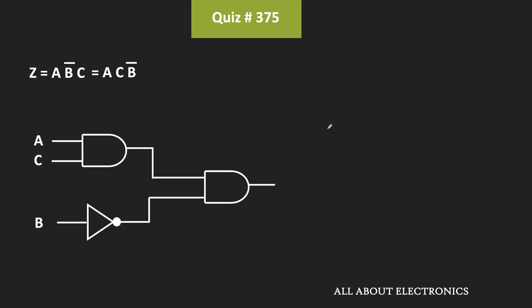Using an AND gate, the AND operation of A and C is performed. Similarly, to get B̄, the B signal is passed through a NOT gate, and then the AND operation of AC and B̄ is performed using another AND gate.